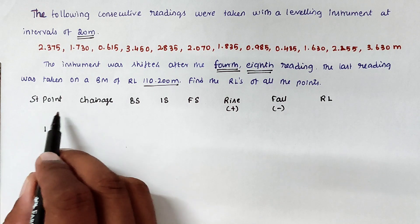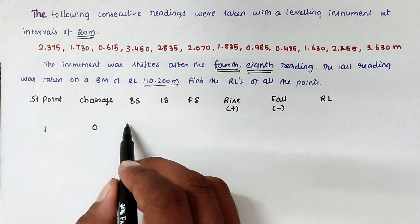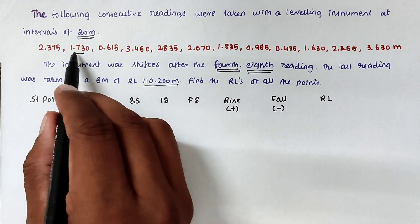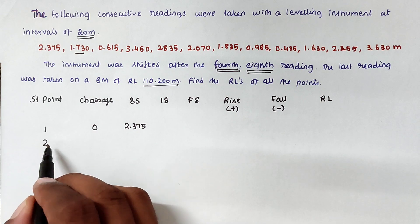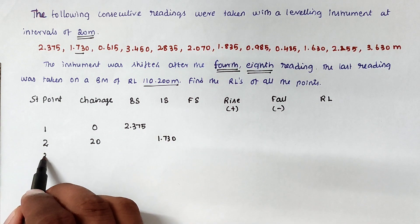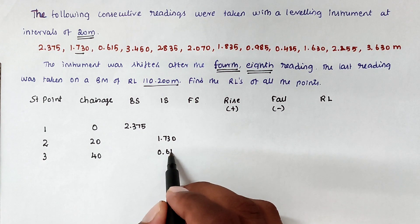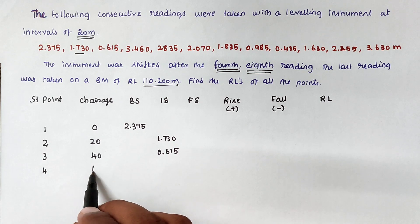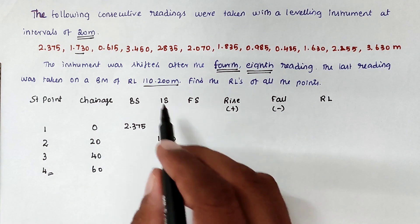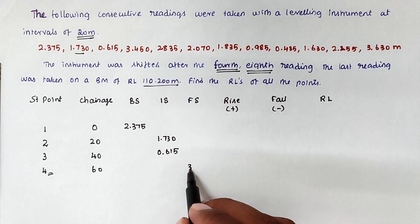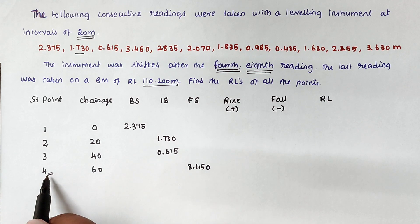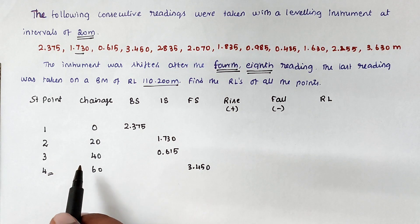Station point 1: the chainage is 0, the backside reading is 2.375. Next, at chainage 20 meters, station point 2, the intermediate side reading is 1.730. At chainage 40 meters, station point 3, the intermediate side reading is 0.615. At chainage 60 meters, station point 4 is the change point, so we write the foresight reading as 3.450.